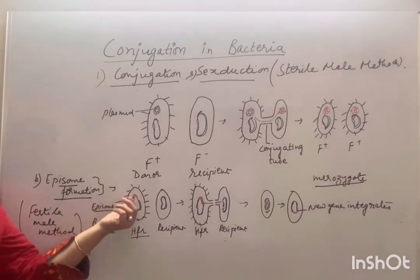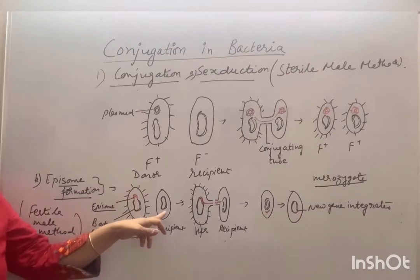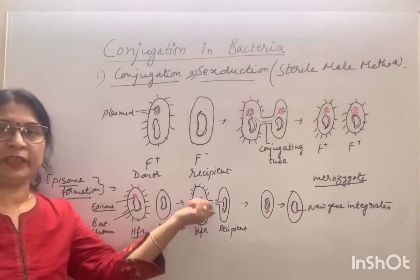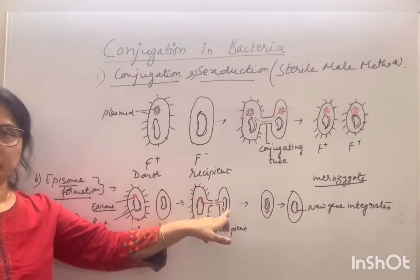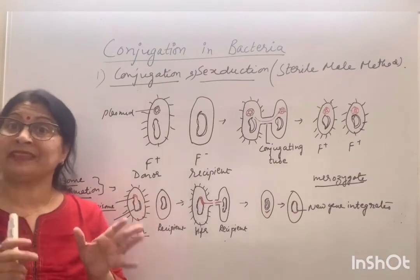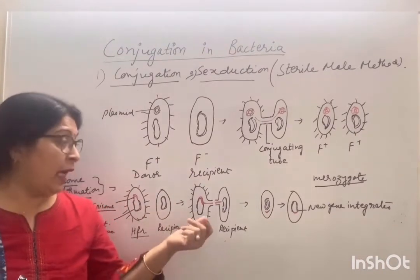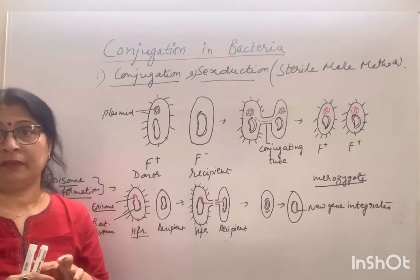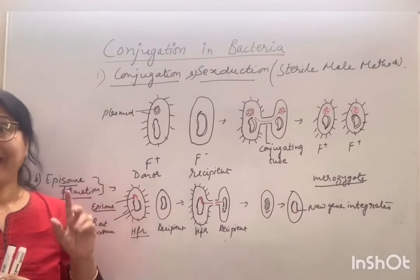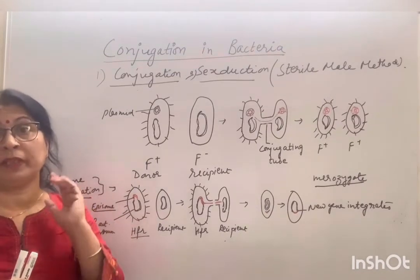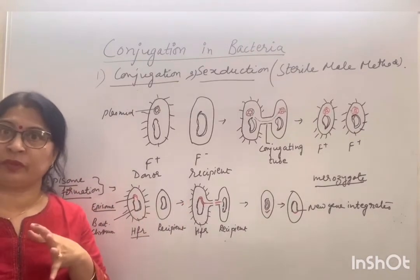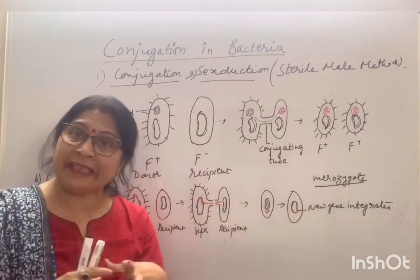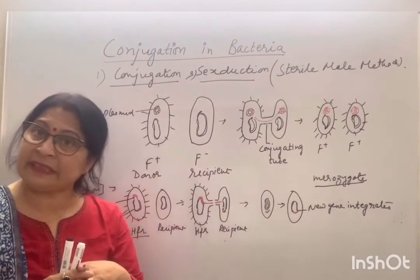In epizome formation, the plasmid is attached to the bacterial chromosome. After self-replication, the genetic material cannot fully transfer to the recipient because the epizome is too long and the conjugating tube is difficult to maintain. The transfer of each gene takes time — one gene transfers in about 7 minutes, two genes in 9 minutes, and three genes in 10 minutes. The new gene either integrates with or replaces the recipient's bacterial chromosome.